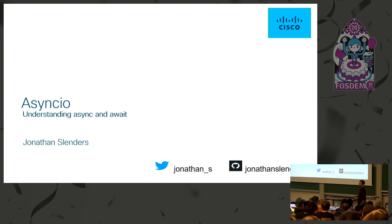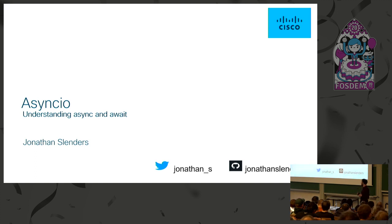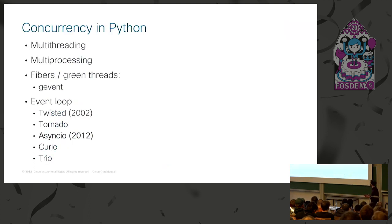We're going to talk about asyncIO in Python — specifically the async and await keywords that were added a couple of years ago, how we can use them within Python, and the difference between writing asyncIO code and writing threaded code, since that's another way of doing concurrency. This is all about how we can speed up our program and do things in parallel to improve execution speed.